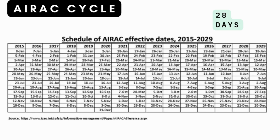The Aeronautical Information Regulation and Control cycle is a standardized system used to ensure that all aeronautical information is updated in a synchronized and timely manner. Updates are issued every 28 days, ensuring that changes to flight procedures, navigation aids, and other critical information are implemented simultaneously worldwide. This regular update cycle helps maintain the accuracy and reliability of aviation data, contributing to the overall safety and efficiency of air navigation.